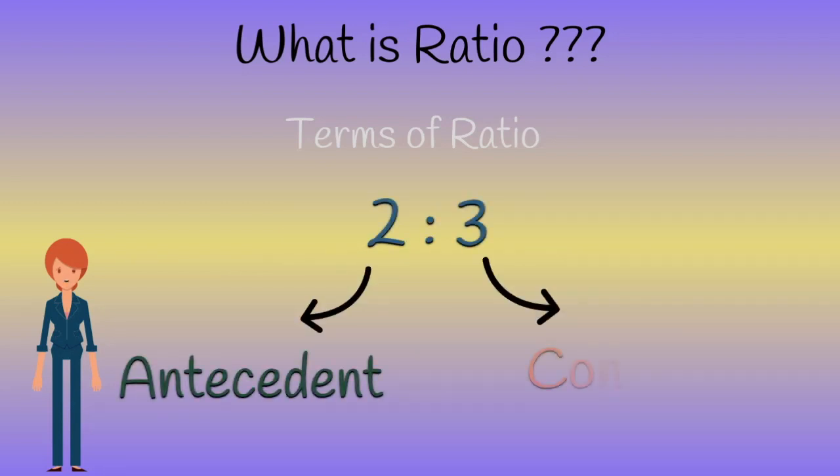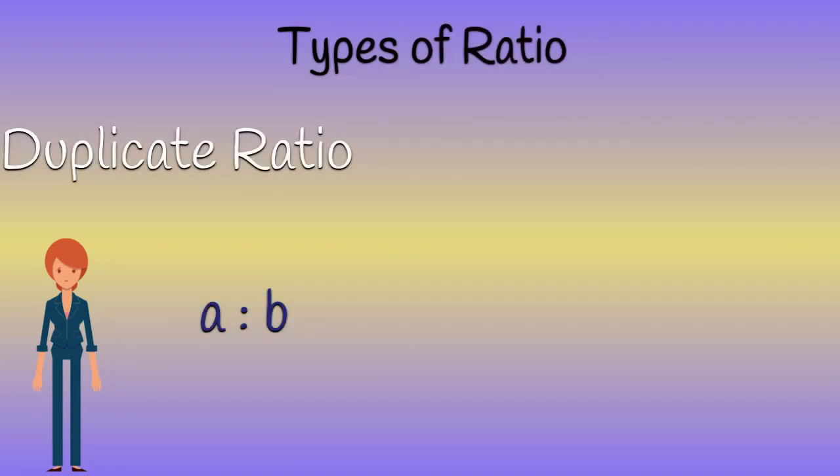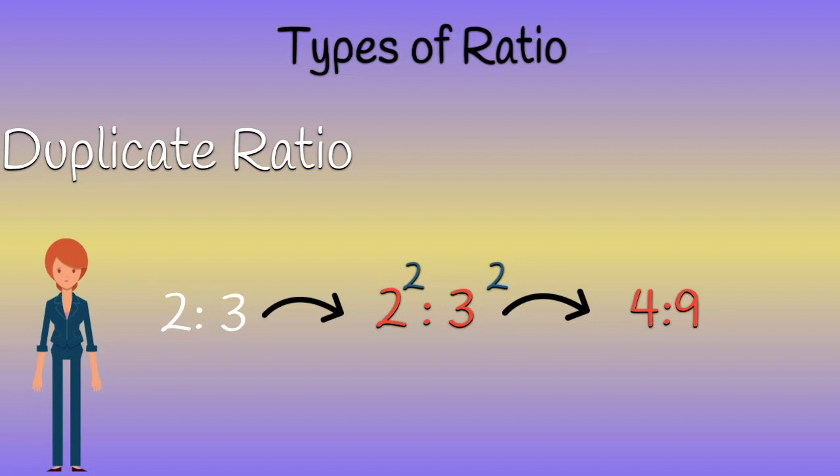Duplicate ratio: If a to b is a ratio, then its duplicate ratio is a square to b square. In our consideration, two to three, its duplicate ratio is two square to three square, that is four to nine.